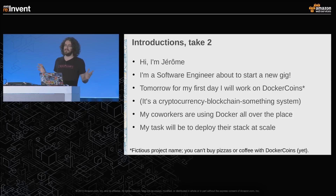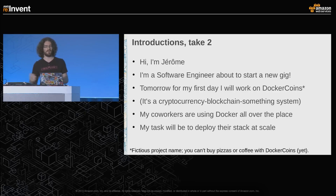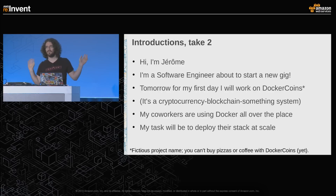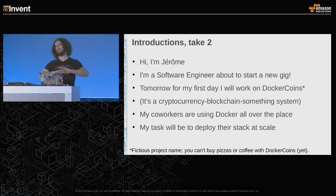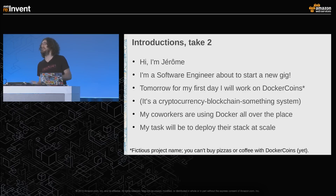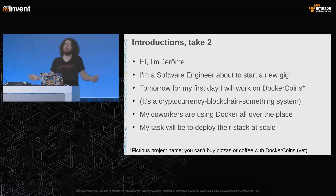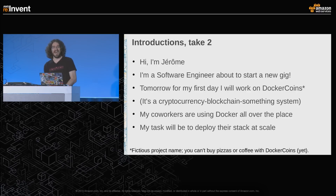Let's imagine for a second that I'm just a software engineer, and tomorrow I'm going to start at a new company working on a new project called Docker Coins — something with Bitcoin, cryptocurrency, blockchain. These people are big fans of Docker and use Docker and Compose, and they're happy with it. But they don't know how to deploy at scale, and they hired me for that, because on my resume it says I know how to cloud, and during the interview I could tell the difference between EC2 and S3.